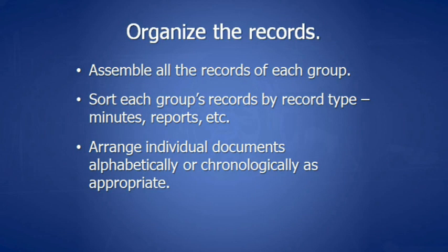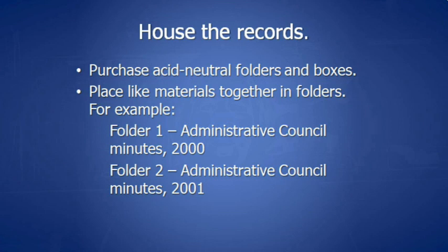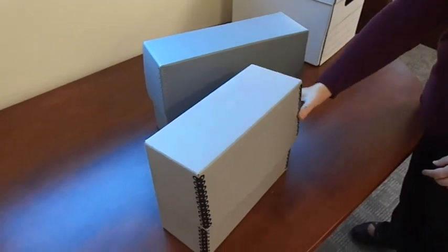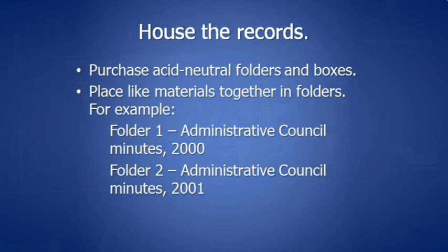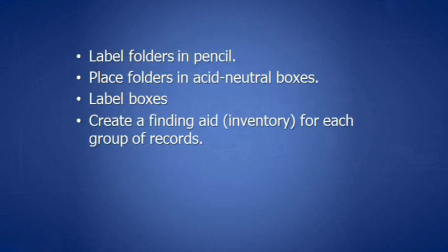Your next step is to gather the records. Use the retention schedule to determine which records should be in the archives. Create an inventory list of what will be in your archives. Now you're ready to organize your records — assemble all the records of a particular group: keep your administrative council in one group, your United Methodist Women's records in another group, and so forth. Sort each group's records by record type — divide into minutes and reports, or other memorabilia, especially for United Methodist Women and youth groups. Arrange your documents alphabetically or chronologically as appropriate. Now consider how to house your records — if your budget allows, purchase acid-neutral folders and boxes. If not, record storage boxes and good quality file folders from your local office supply store will work.